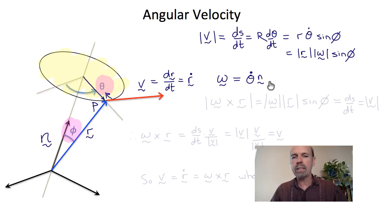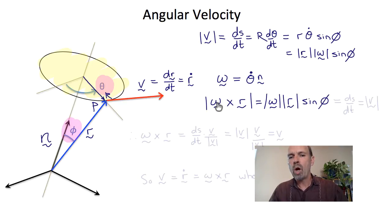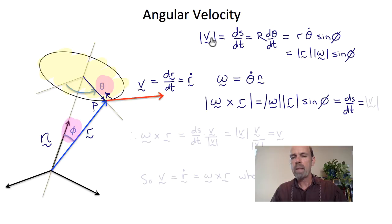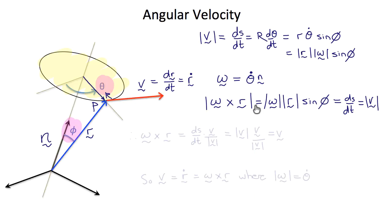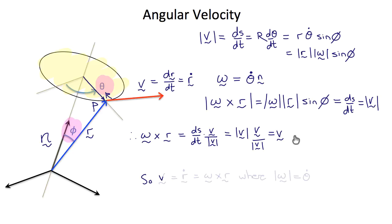The angular velocity vector has magnitude θ-dot and direction n. Now if we construct ω × r and take its magnitude, that magnitude is |ω||r|sin φ, which equals ds/dt, the magnitude of v. Since v is perpendicular to the plane of ω and r, we can write ω × r = (ds/dt)(v̂), and since ds/dt is the magnitude of v, we get ω × r = v. So we now have a vector definition: v = r-dot = ω × r, where |ω| = θ-dot.